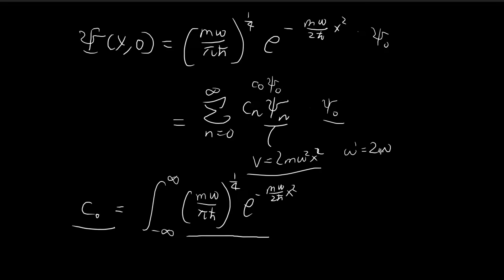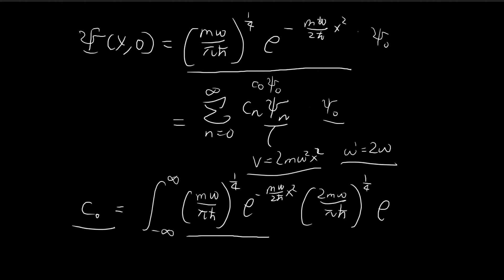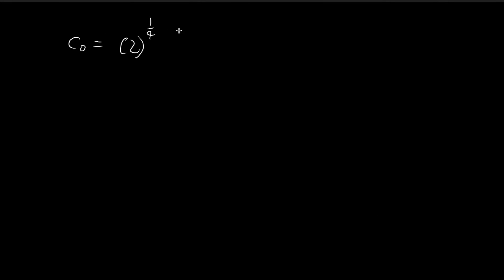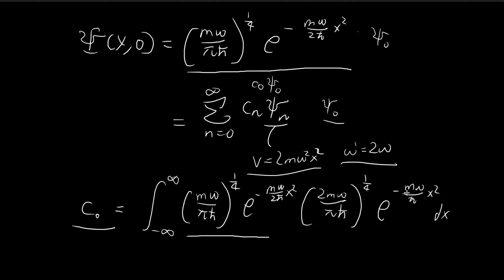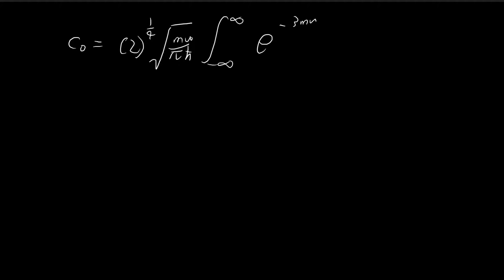The ξ₀ of the new potential has the same form as the original expression, but with 2ω substituted in place of ω. Substituting 2ω, the factors of 2 partially cancel with the denominator. After rearranging, we have a constant prefactor of 2^(1/4) times (mω/πℏ)^(1/2), and an integral of the form exp(−3mω/2ℏ · x²) dx. This is a standard Gaussian integral.